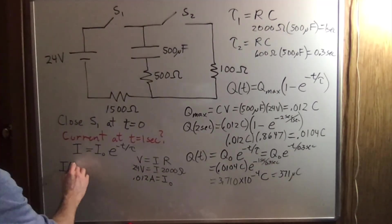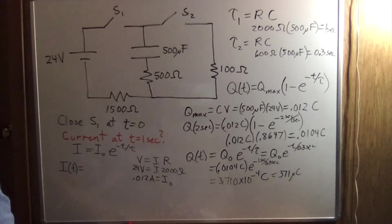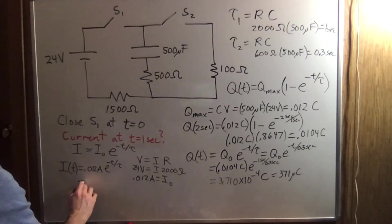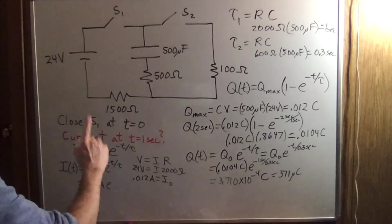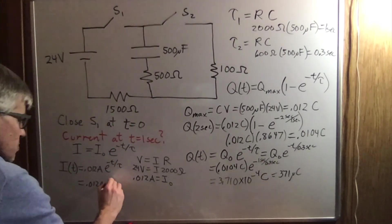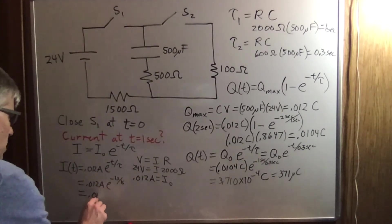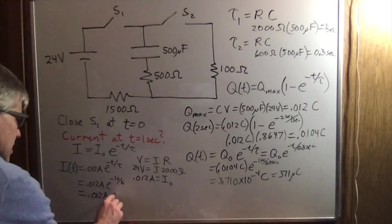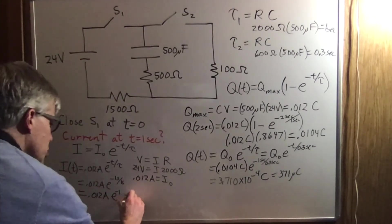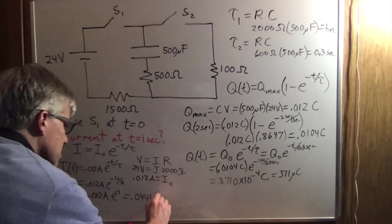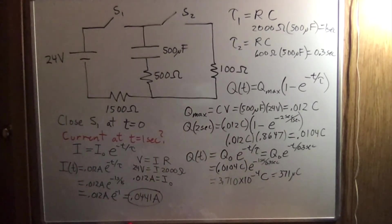So the current as a function of time here is going to be 0.012 amps e to the minus t over tau. Now we are saying 0.012 amps and we're saying one second in and the time constant is one. So that's minus one second over one second. So that's 0.012 amps times e to the negative one, which is 0.0441 amps or 44.1 milliamps.